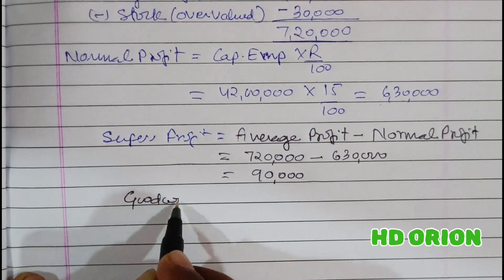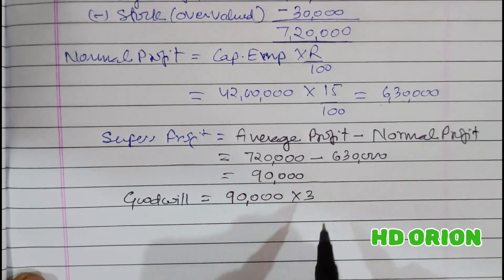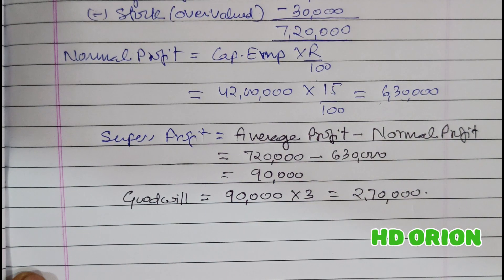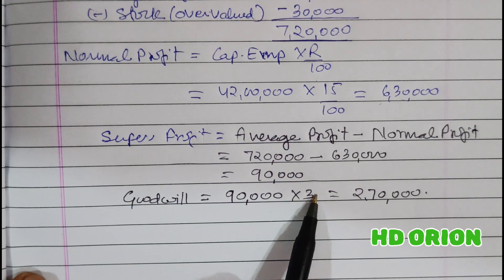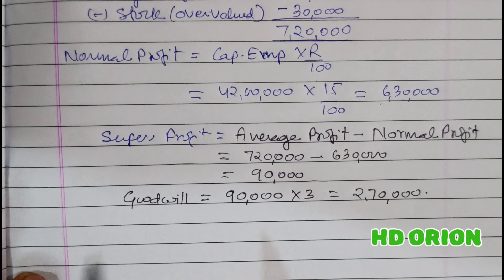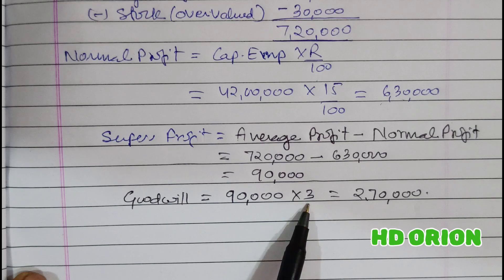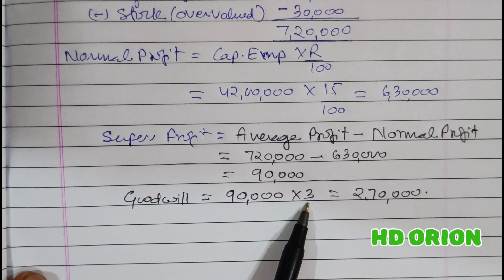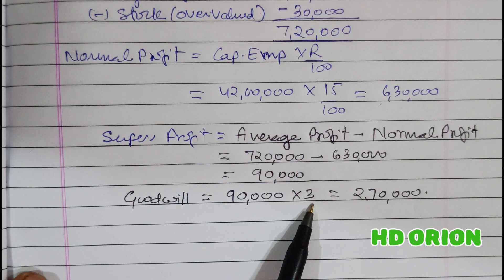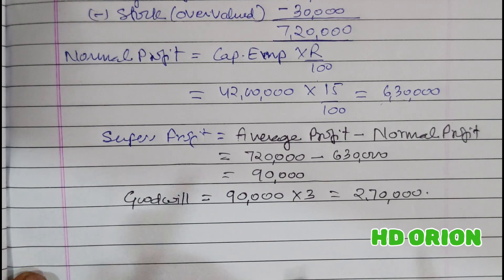Goodwill equals super profit multiplied by 3, giving ₹2 lakh 70,000. This means the firm expects a super profit of ₹90,000 to be earned in the next 3 years. The number of years of purchase varies from enterprise to enterprise; future is uncertain so only a small number of years is assessed. Based on that, the goodwill of the firm is ₹2,70,000.